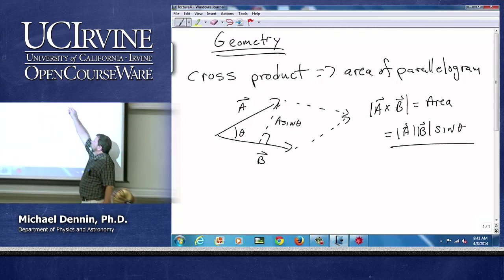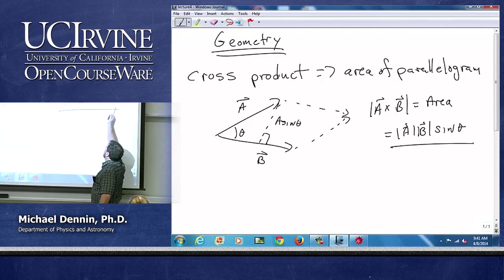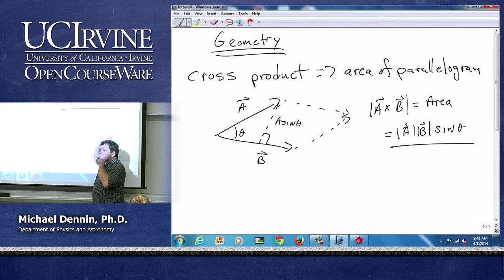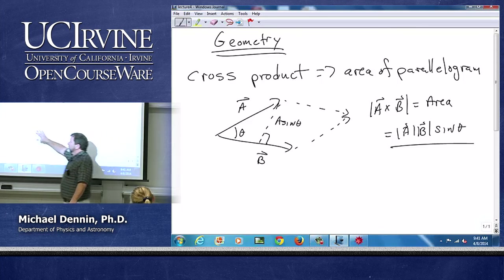Right? I can measure lengths with rulers. I can measure angles with protractors. Those are all physical things. And notice I need to know nothing about components. There's no coordinate system I've drawn. This is pure geometry.